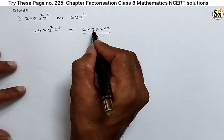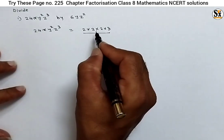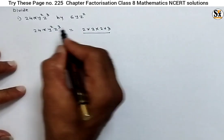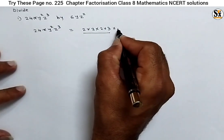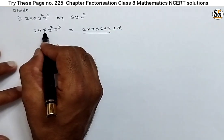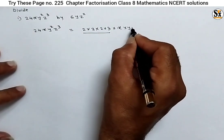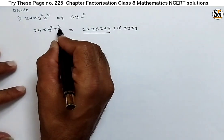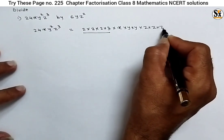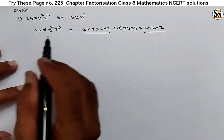So 2×2×2×3 = 24. These prime factors cannot be further reduced. For the variable x, x is already a prime factor which cannot be further reduced. y² can be written as y×y, and z³ can be written as z×z×z.